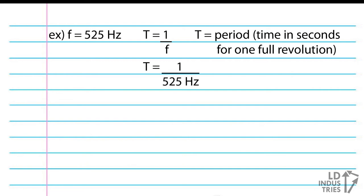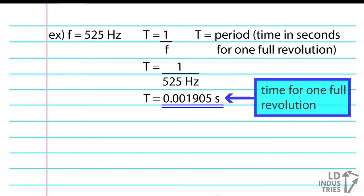Running this calculation, we get a period of about 0.001905 seconds. Now, remember, this is the time it takes the spinning mirror to make one full revolution.